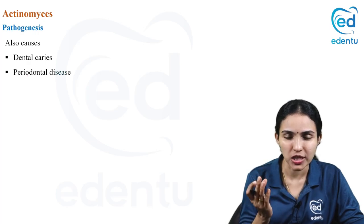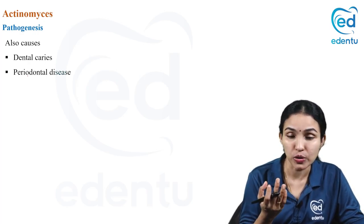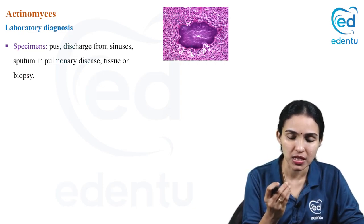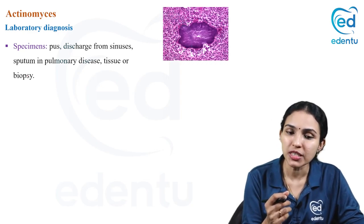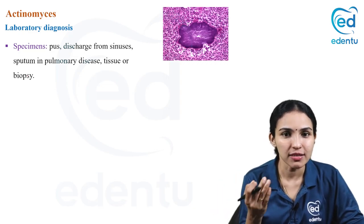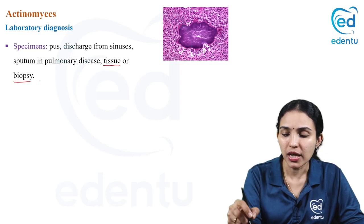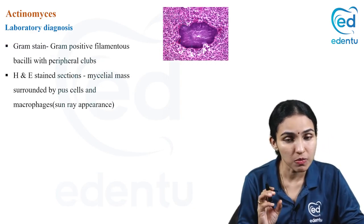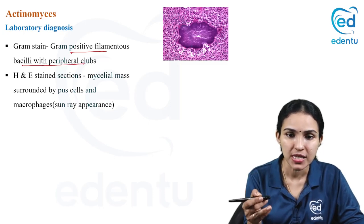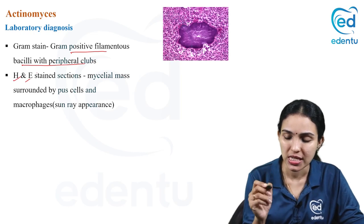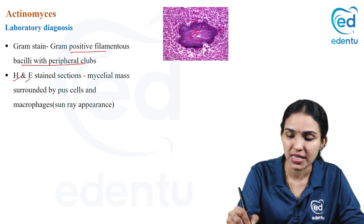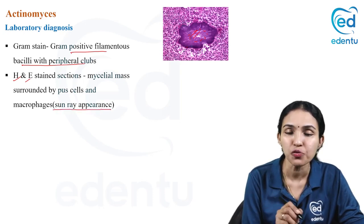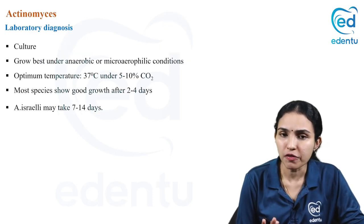Actinomyces can also cause dental caries and periodontal diseases. For specimen collection in actinomycosis, you can take pus from sinuses — obtaining the granule itself is ideal. For pulmonary disease, collect sputum; for thoracic or abdominal disease, take a tissue or biopsy sample. On gram stain, you see gram-positive filamentous bacilli with peripheral clubs. On histopathological staining like hematoxylin and eosin, you see the mycelial mass surrounded by pus cells and macrophages, giving the sun ray appearance.